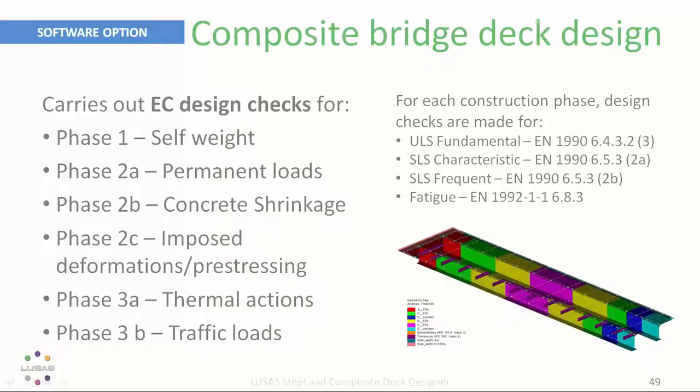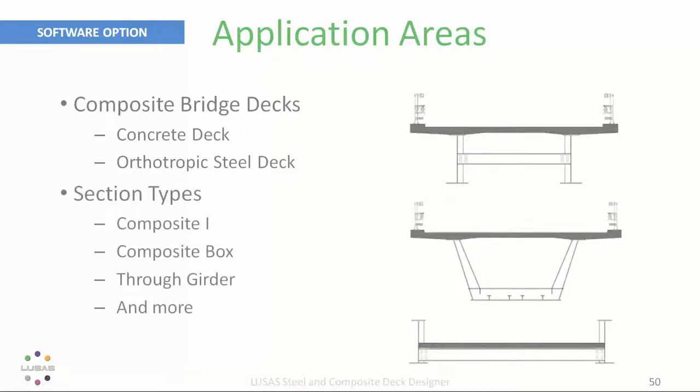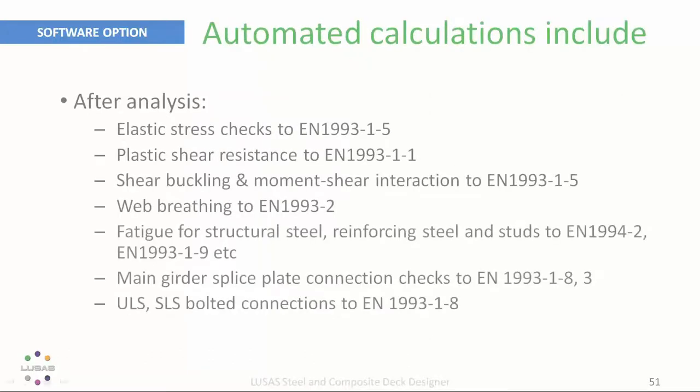Graphs and a report containing all our input data and output with references to the Euro code clauses can be easily created. This will work for a wide range of composite decks and section types shown here. After carrying out the various proportion checks like effective slab widths to Euro code and differential shrinkage and temperature checks, the steel composite bridge deck designer then carries out comprehensive design checks, as you can see listed here.